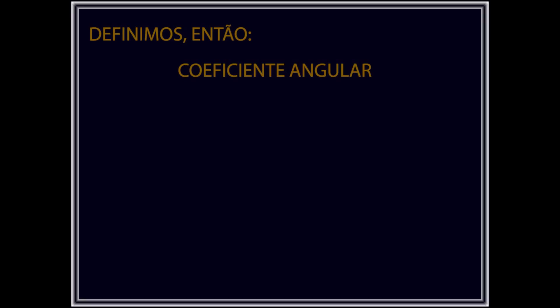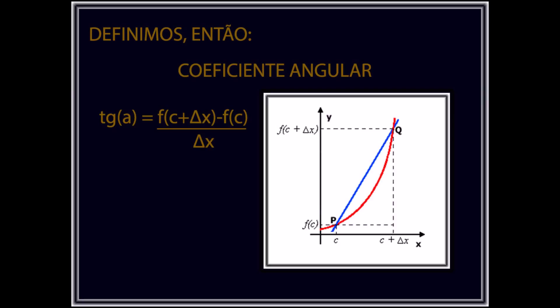Definimos, então, o coeficiente angular da reta secante PQ à curva como sendo a tangente do ângulo A, do qual expressamos matematicamente como o quociente entre a função de c mais delta x menos a função de c, dividido por delta x.